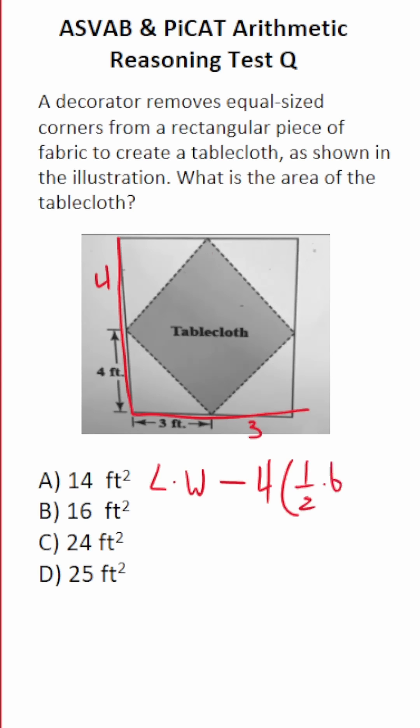It's 1 half times base times height. So area of the big rectangle. Again, its length is 3 plus 3 or 6. Its width is 4 plus 4 or 8. Minus 4 times 1 half times base. What's the base of this right triangle right here? It's 3. What's its height? It's right here. It's 4.